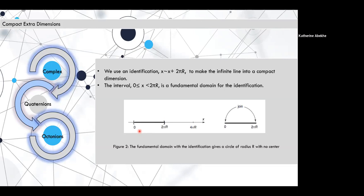So we do this using an identification. So that, let's say this is a point x. If we add 2πR to it and it appears, that's the same point x. So we call this interval from 0 to 2πR a fundamental domain for the identification. And we can simply join these points, the two endpoints together, and we'll get our circle, our compact dimension.